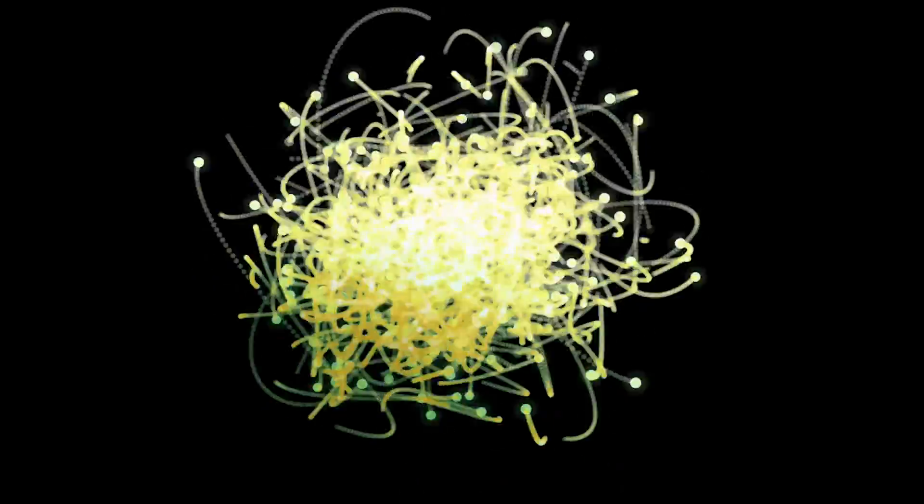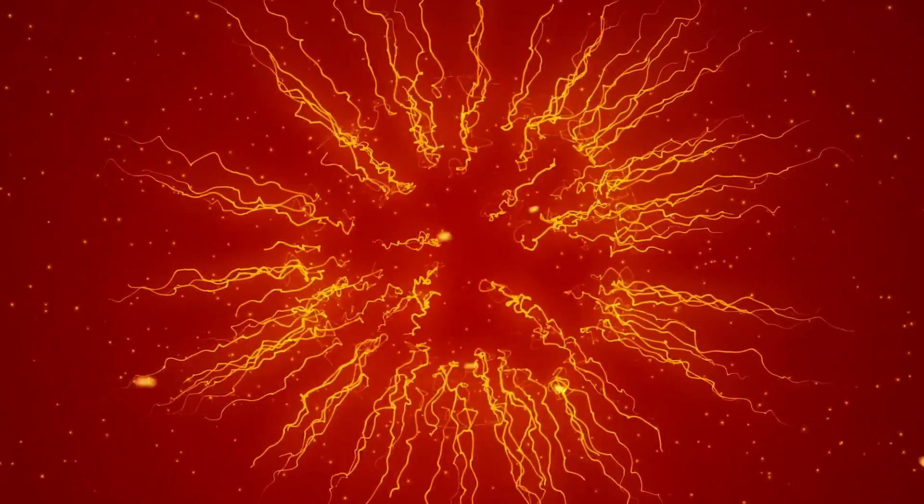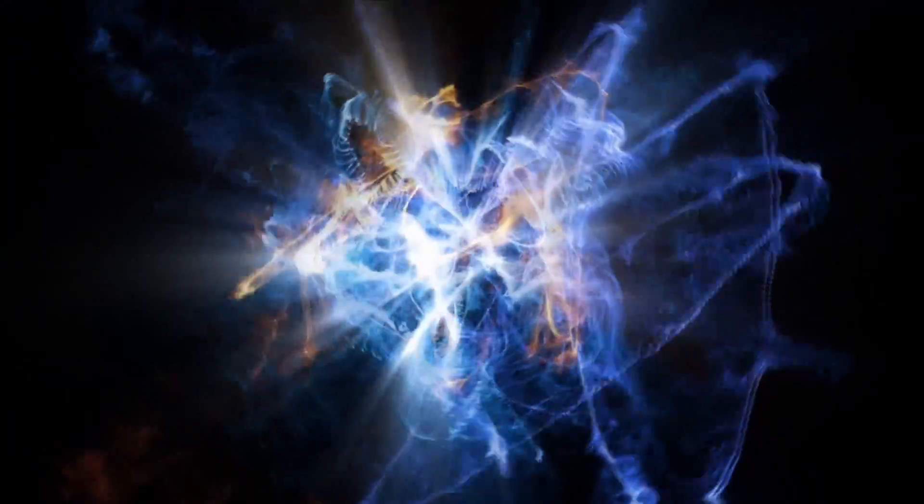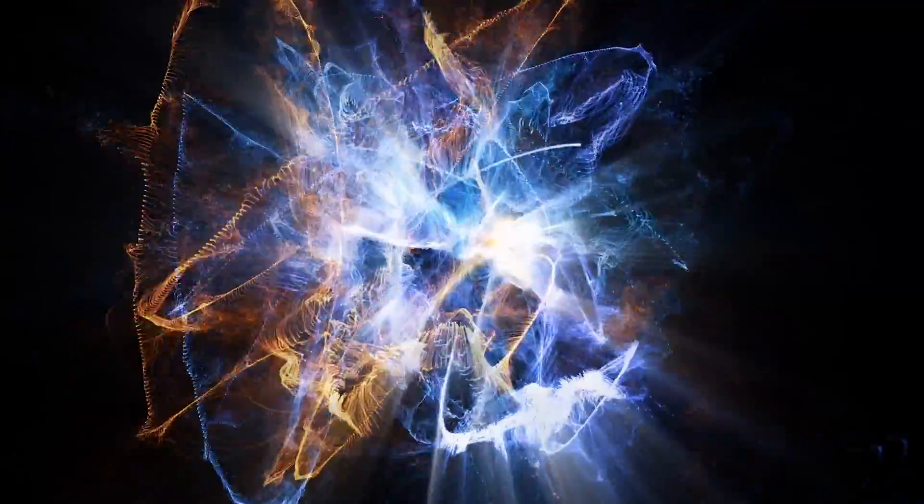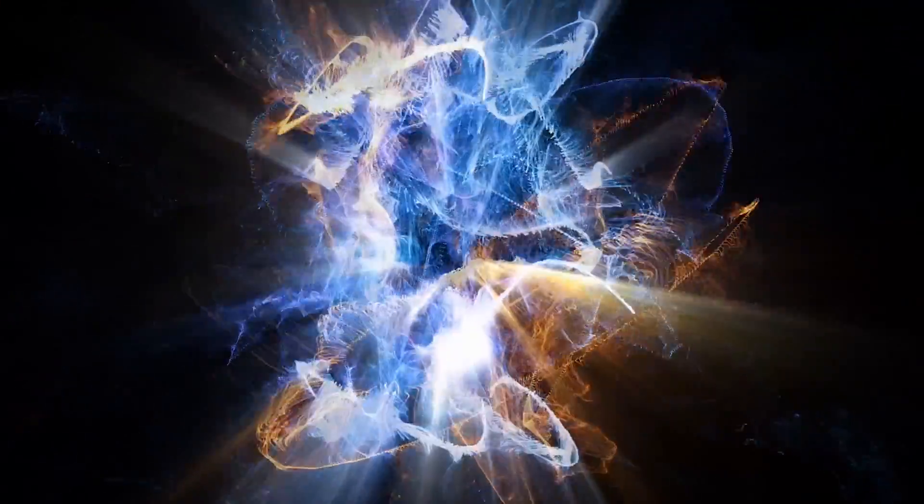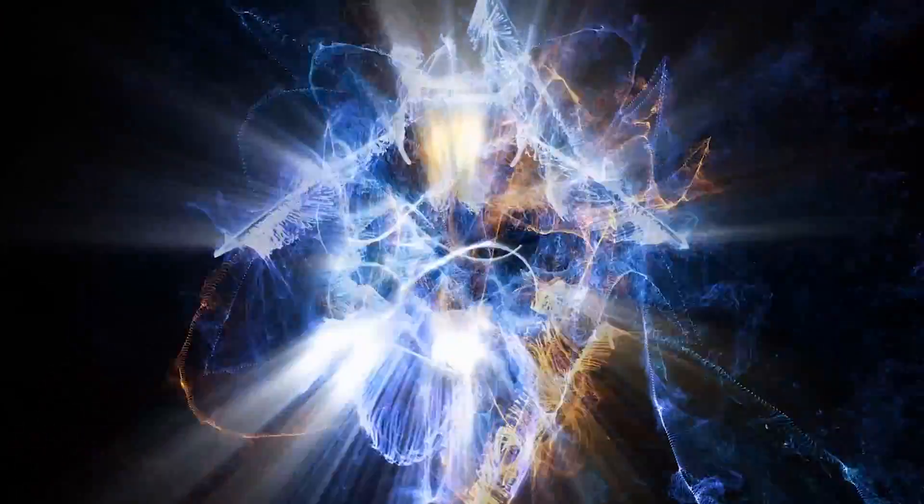Antimatter is opposite to matter, literally. For every subatomic particle, such as an electron, a proton, a neutron, etc., there exists an antiparticle such as an antielectron, antiproton, and antineutron.